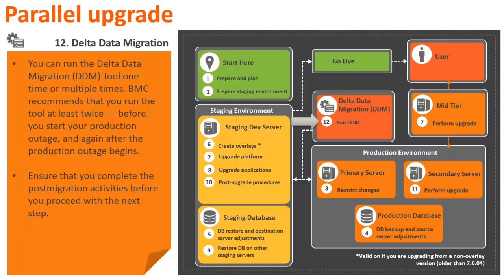Stage 12 is when you must perform the delta data migration for the first time. You can run the delta data migration tool one time or multiple times. BMC recommends that you run the tool at least twice before you start your production outage and again after the production outage begins. Ensure that you complete the post-migration activities before you proceed with the next step.